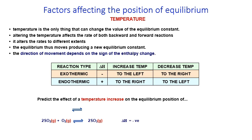Temperature is the only thing that can change the value of the equilibrium constant — Kc is temperature dependent. Altering the temperature affects both the forward and backward reaction rates to different extents, producing a new equilibrium constant. The direction of movement depends on the sign of the enthalpy change. For an endothermic reaction, increasing temperature moves equilibrium to the right. For an exothermic reaction (negative ΔH), increasing temperature moves the reaction to the left favouring reactants, and decreasing temperature moves it to the right favouring products.